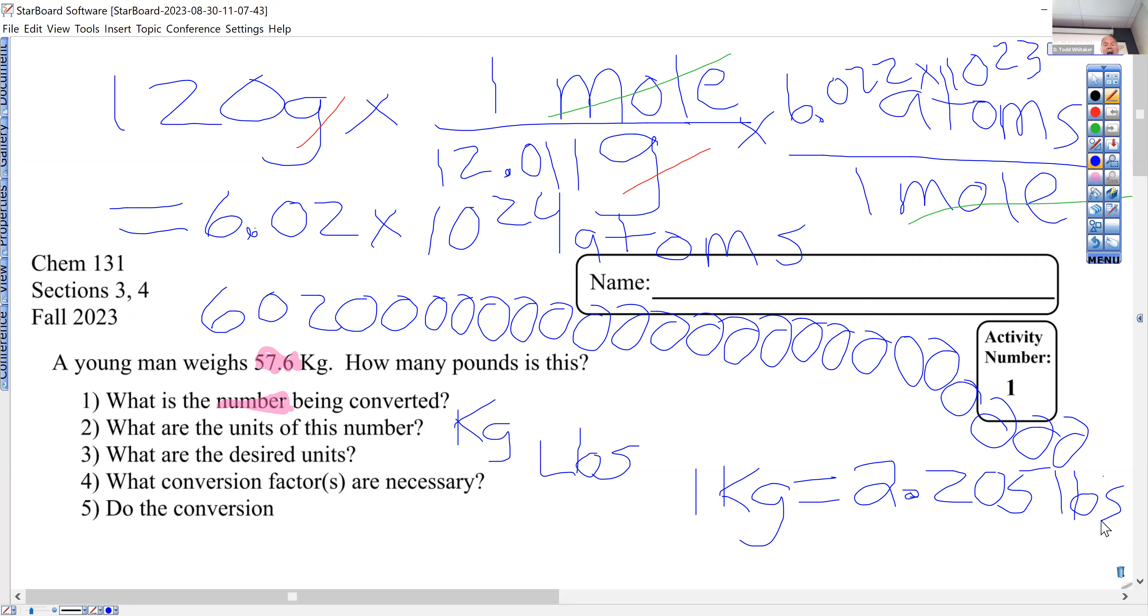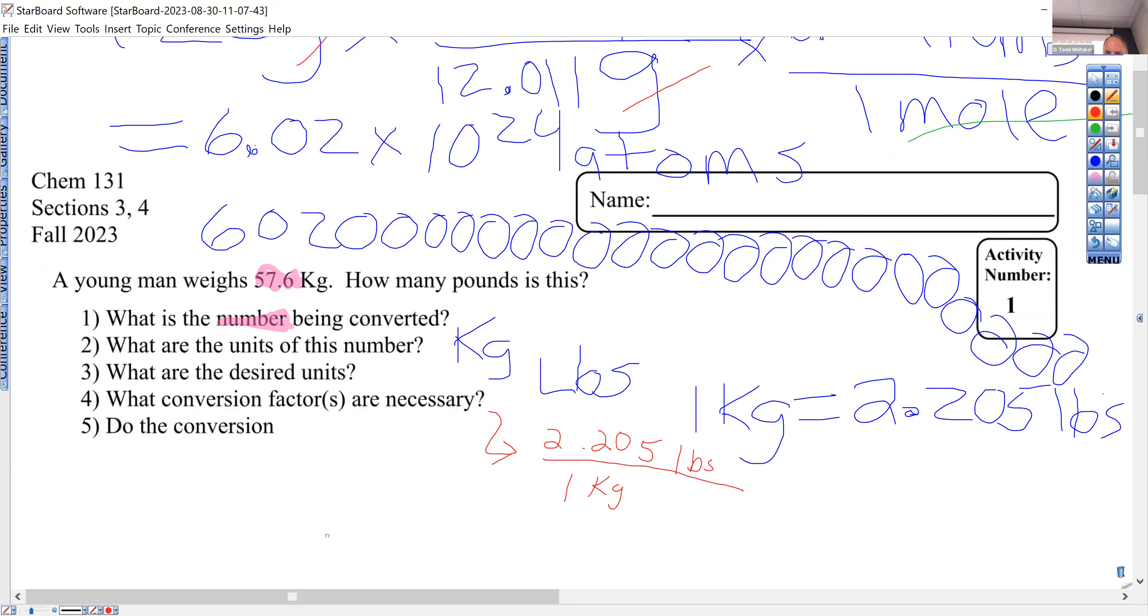Here we are - we're getting rid of kilograms, correct? Just take whatever's in front of kilograms, the number and the kilograms, and put it in the denominator. So the conversion factor is in red and it's right here. Whatever you're getting rid of is in the bottom, and it's kilograms - one kilogram. And the thing on top is the other part of this equals 2.205 pounds. It is much harder to do it with a mouse than write it. Do the conversion.